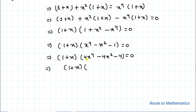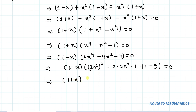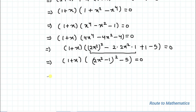We rewrite 4x⁴ − 4x² − 4 by completing the square: 4x⁴ = (2x²)², and 4x² = 2·(2x²)·1, so we get (2x² − 1)² − 5 = 0. Therefore the equation becomes (1 + x)[(2x² − 1)² − 5] = 0.